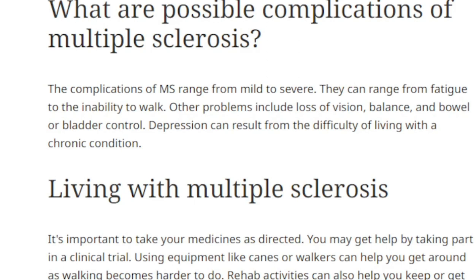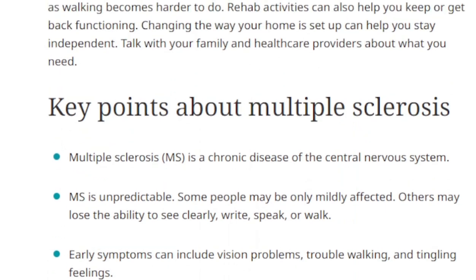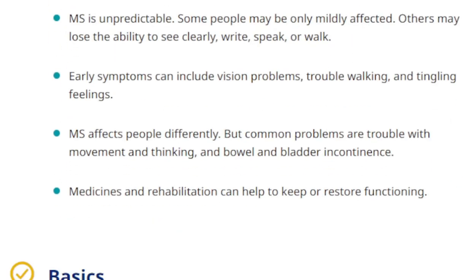That can and will cause depression because you always feel like you're failing at life. Key points: multiple sclerosis is a chronic disease of the central nervous system; MS is unpredictable — some people may have only mild effects and some lose the ability to see clearly, right, speak, or walk. Early symptoms can include vision problems, trouble walking, and tingling feelings. Common problems are trouble with movement, thinking, and bowel and bladder control. Medicine and rehabilitation can help keep and restore function — that's coming from Johns Hopkins.